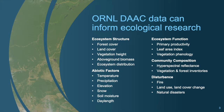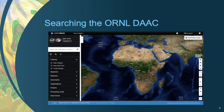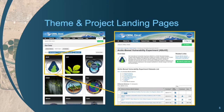To make data easier for researchers to get, we have developed tools and services for accessing data we hold, plus some related data archived by other DACs. The quickest way to access ORNL DAAC data is to use the search bar at the top of the home page. You can also find ORNL DAAC data through Earth Data Search, or through the Get Data option on the menu bar, which allows you to browse data by science theme or NASA project.